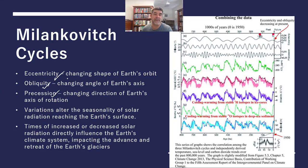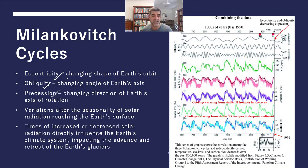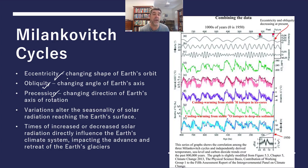In terms of the Earth's orbit around the Sun, there are three important things to be aware of. The first is eccentricity — this is the changing shape of the Earth's orbit. The second is obliquity, which is the changing angle of the Earth's axis. The third is called precession, most easily demonstrated with a top.